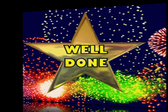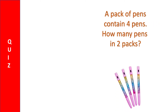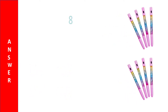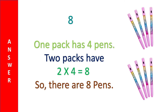Well done! The next question: A pack of pens contains 4 pens. How many pens are in 2 packs? The options are 6, 4, 10, and 8. The correct answer is 8. One pack has 4 pens, so 2 packs have 2 × 4 = 8. So there are 8 pens.